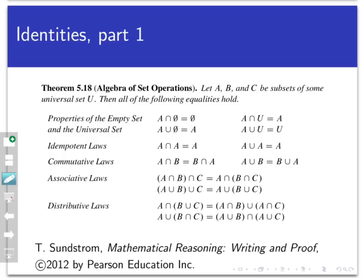Here's one set of set identities. Some have to do with the empty set and some with the universal set. For example, A intersect the empty set is always the empty set, and A union the empty set is always itself. A intersect A equals itself, and A union A equals itself. The commutative laws say I can intersect or union sets in any order I wish. The associative laws say I can group intersections and unions arbitrarily, as long as they're all intersections or all unions.